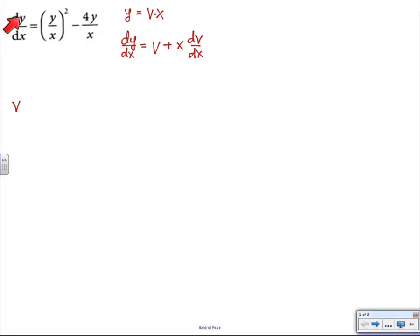So in our differential equation, where we had dy/dx, we replace it with v + x·dv/dx, and where we had (y/x)², we're going to have (vx/x)², and then where we had 4y/x, we're going to have 4vx/x, which simplifies nicely. We're going to have v² - 4v.